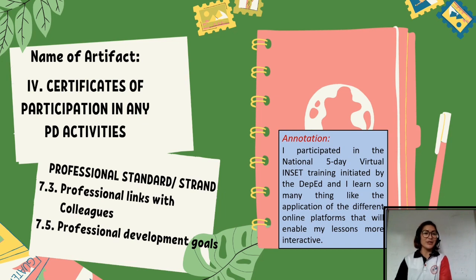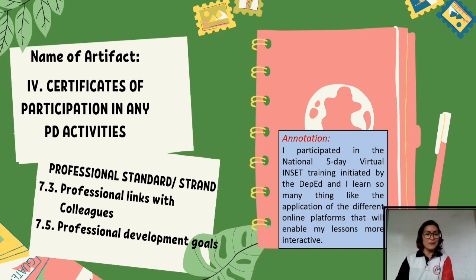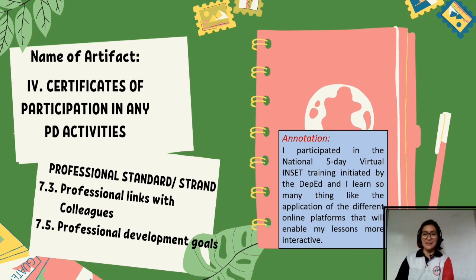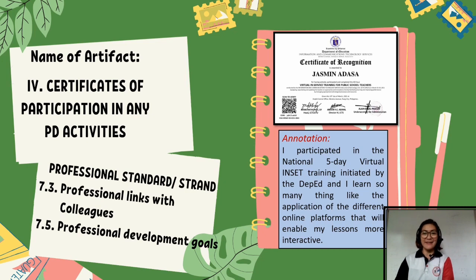The fourth artifact covers certificates of participation in professional development activities. The professional standards or strands under this artifact are professional links with colleagues and professional development goals. Under this artifact, you attach some of the certificates from activities you attended during the school year. In my case, I attached the five-day INSET we had, along with my annotation. You don't need to attach all certificates — just provide evidence that you attended the full five-day training.